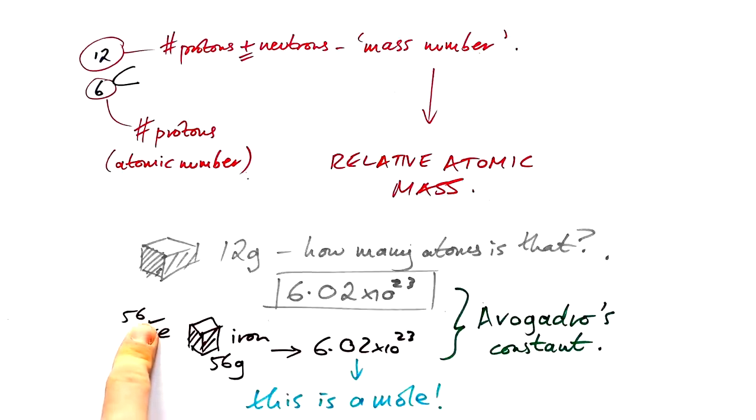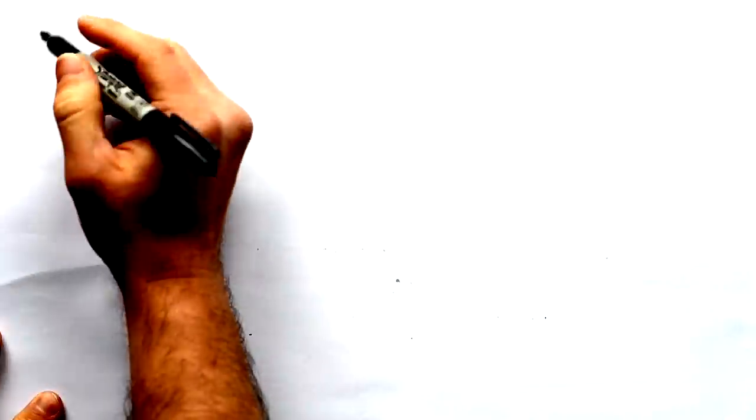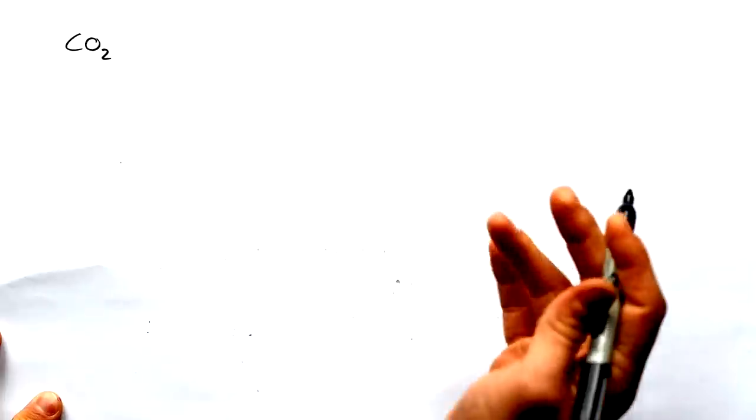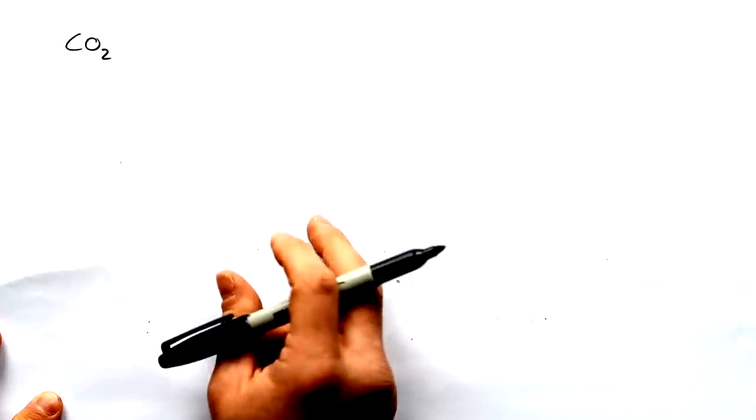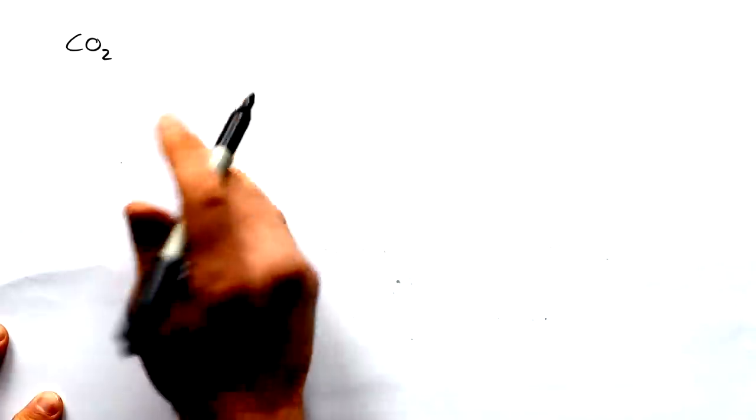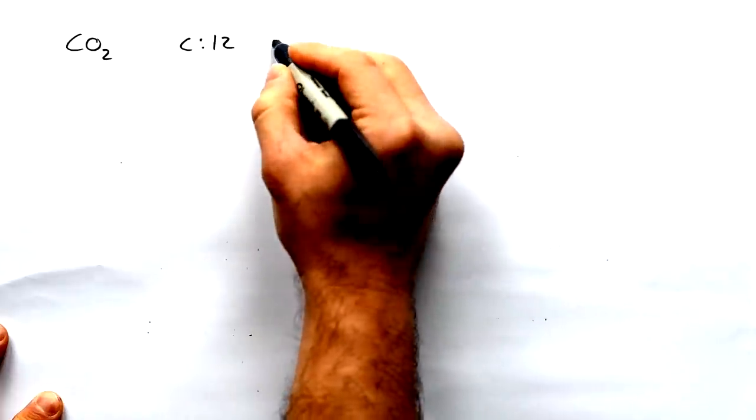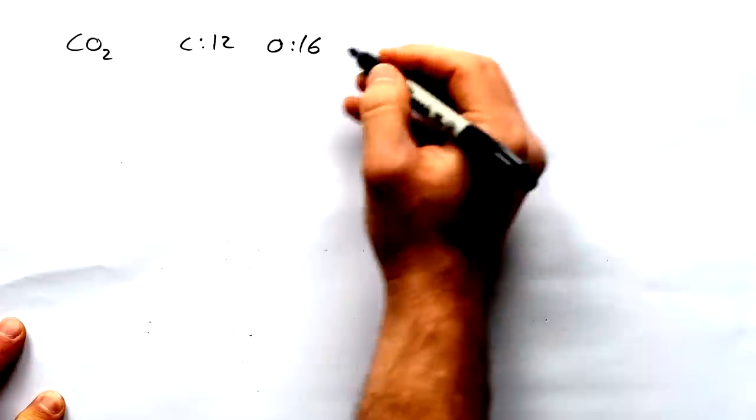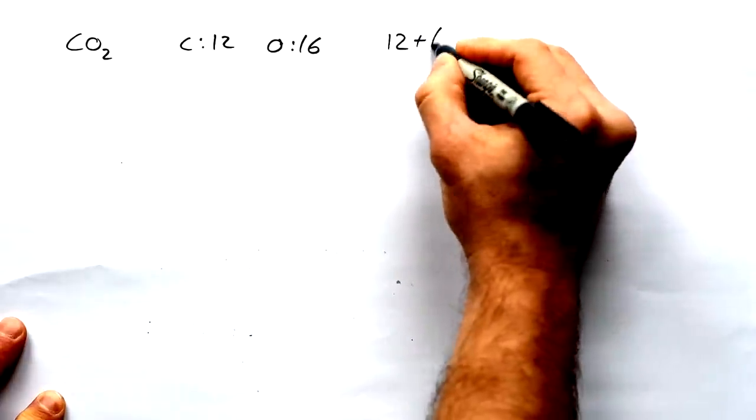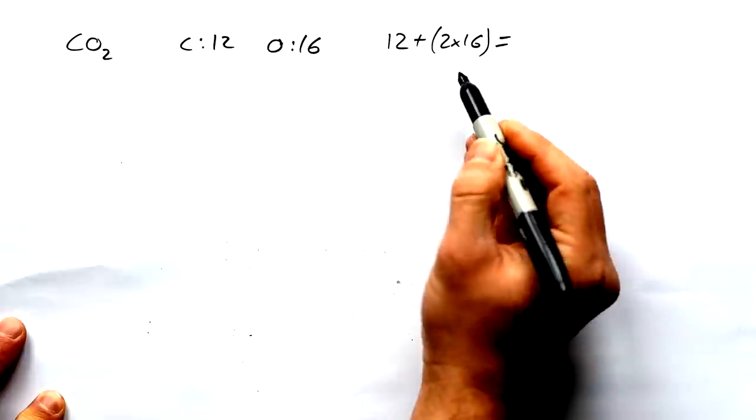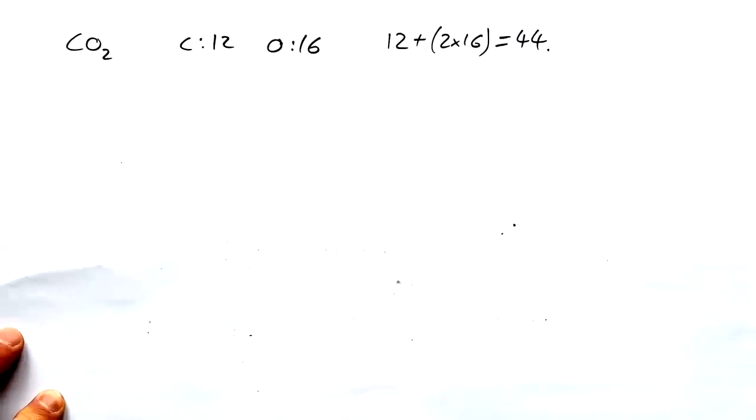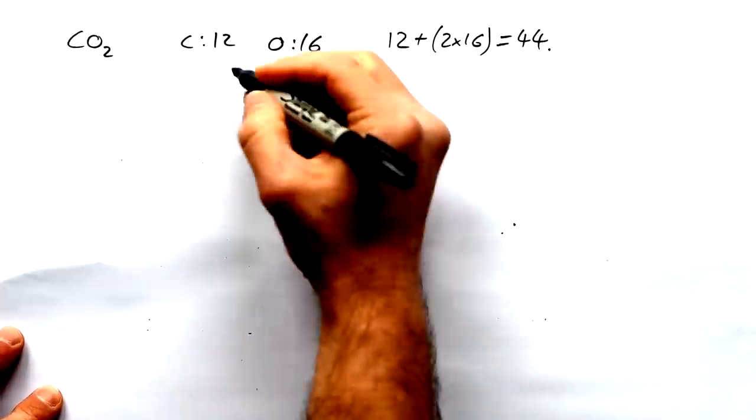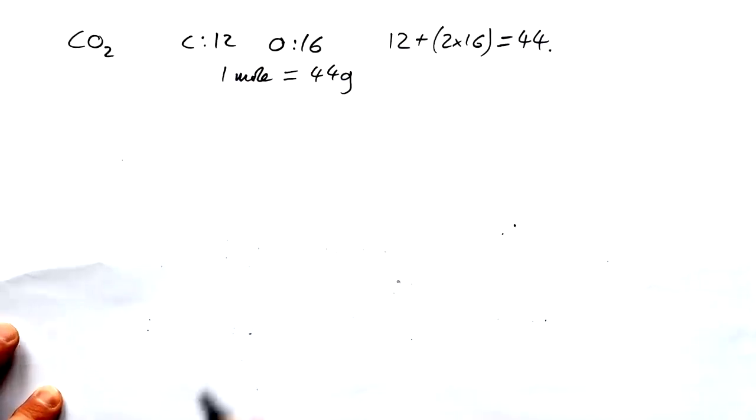The same idea extends to compounds as well. So let's say that we got some CO2. What does one mole of that weigh? We know that it's the same number of molecules. So 6.02 times 10 to the 23 molecules. But what are the relative atomic masses of these? Well, we saw that earlier carbon is 12, oxygen is 16. So what's the relative formula mass, as they call it, for carbon dioxide? Well, it's going to be 12 plus two lots of 16. So it's going to be 32 plus 12, that's 44. The relative formula mass for carbon dioxide is 44. What does that mean? It means that one mole of this stuff of carbon dioxide has a mass of 44 grams.